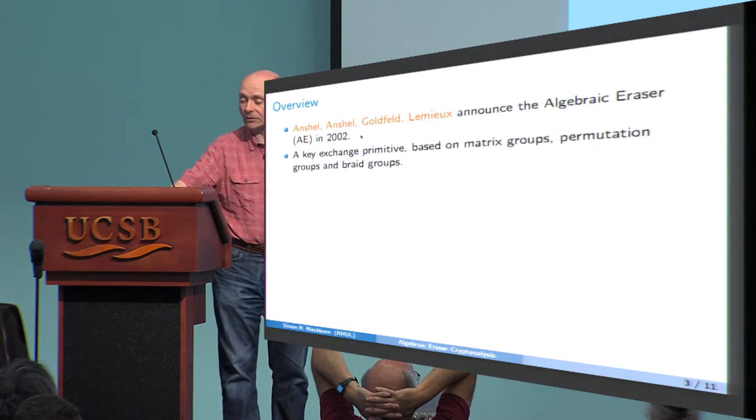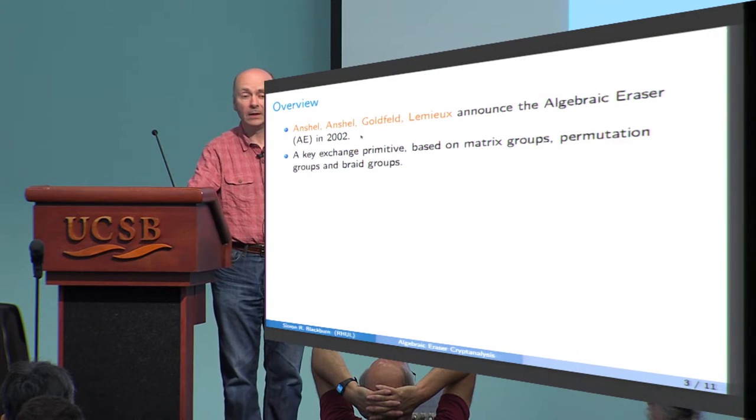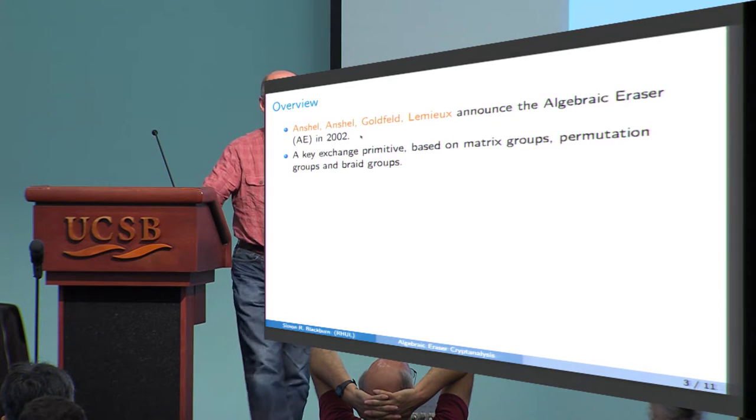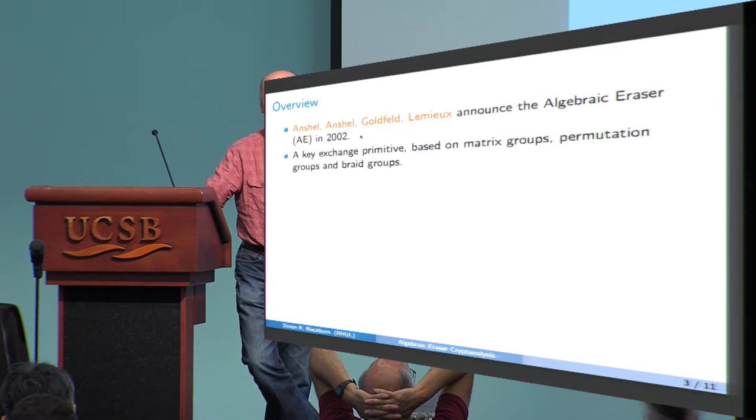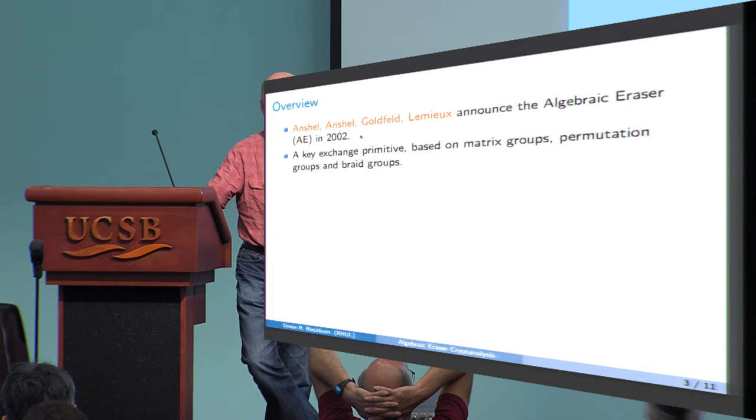As a field, group-based cryptography I think in general has a poor reputation. There's been a lot of schemes which aren't great that have been proposed. However, Anshul, Anshul and Goldfeldt in particular produced some beautiful papers early on with some lovely ideas in, so I think it's always interesting to see anything that this group comes up with, because the ideas are worth thinking about.